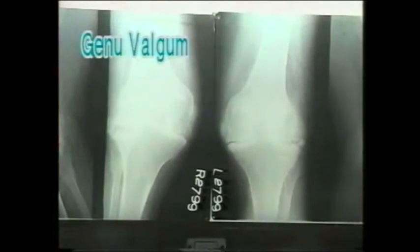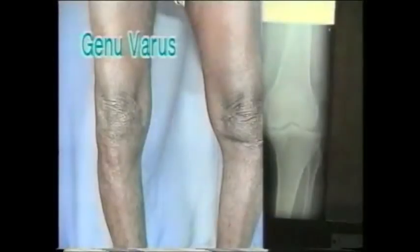Note the destruction of the joint space, which may later lead to bony ankylosis. In this X-ray, the tibia is angulated medially over the femur. This is genu varum.